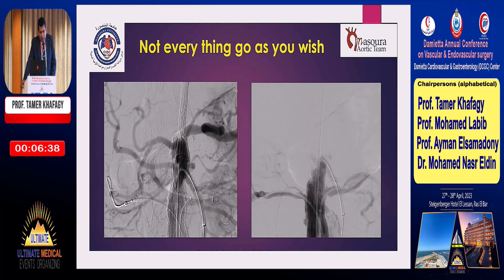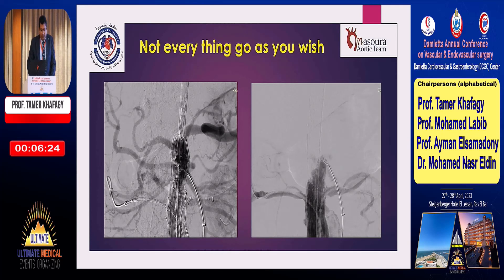Not everything goes as you wish. When we inject contrast inside the graft, we can see the sealing, the SMA, and the left renal — but we cannot visualize contrast in the right renal. So we push the graft approximately 2 to 3 millimeters downward, and after this, we can see contrast inside the right renal artery.